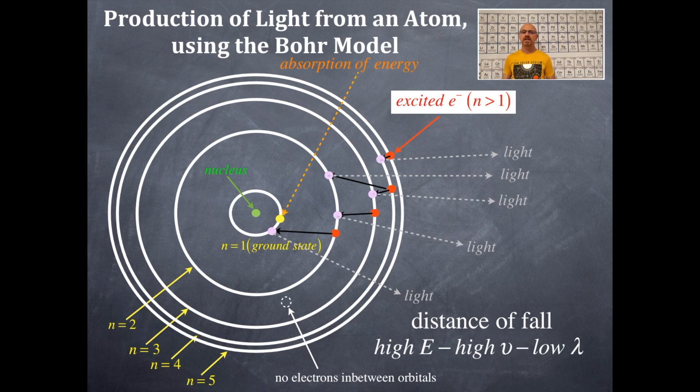Conversely to that, the n equals 5 to 4 will be low energy, low frequency, and long wavelength, not a low wavelength, but a high wavelength, if you will. Does that make sense? Long wavelength.